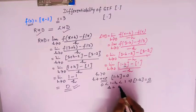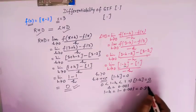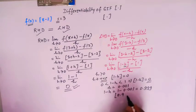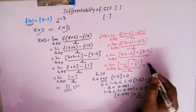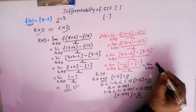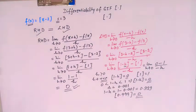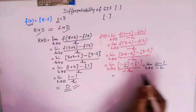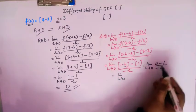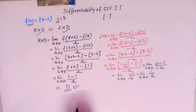We can verify by taking h = 0.001: 1 - 0.001 = 0.999, and ⌊0.999⌋ = 0. So the limit becomes [0 - 1] / (-h) = (-1) / (-h) = 1/h. As h tends to 0, this expression 1/h tends to infinity.